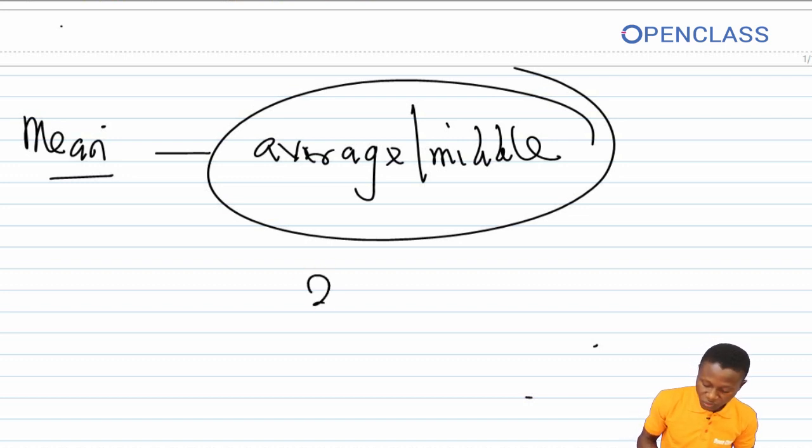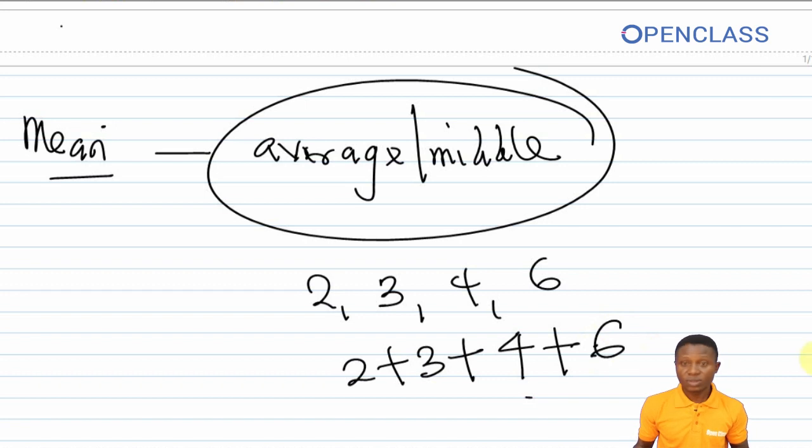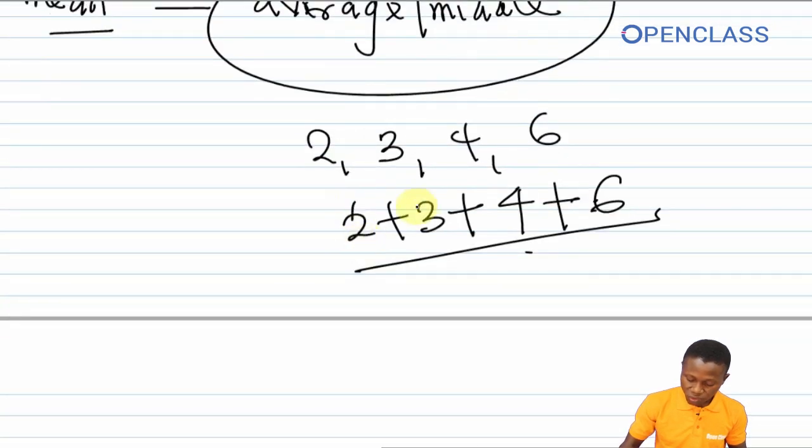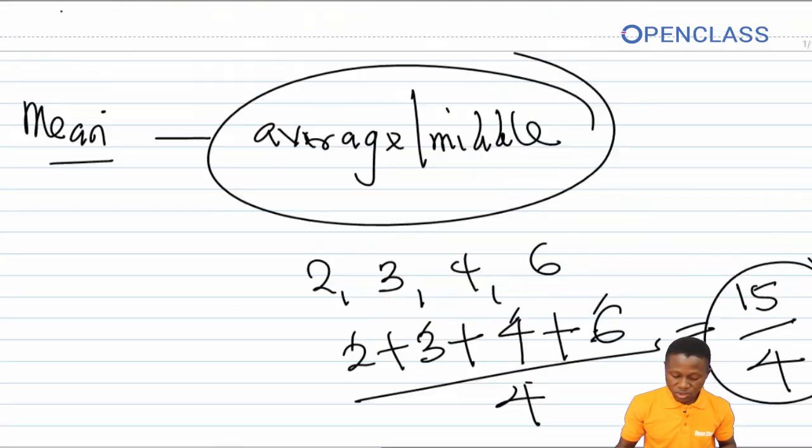For example, if I have the following set of data: two, three, four, and six, and I'm to find the mean of this set of data. All I need to do is to add them together. 2 plus 3 plus 4 plus 6 divided by how many figures are here? We have one, two, three, four, then all divided by 4. So the summation of this divided by 4. 2 plus 3 is 5, 5 plus 4 is 9, 9 plus 6 which gives us 15, that will be 15 divided by 4. So whatever this sum gives us will be the mean of that value.